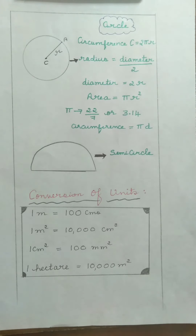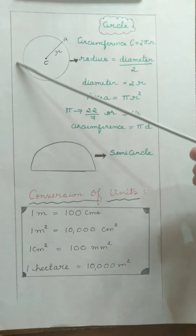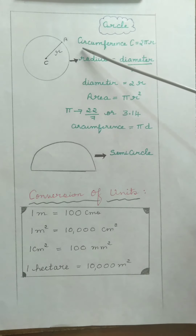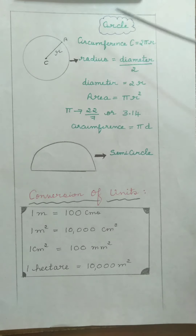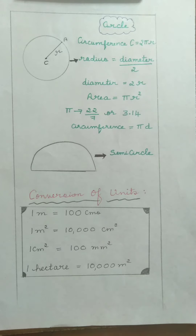Next is circle, which is also a closed figure. In real life, bangles and coins are examples of a circle. The distance around a circular region is known as its circumference. The formula to find the circumference is C equals 2πR, where π is a constant having value 22/7 or 3.14, and R is the radius.